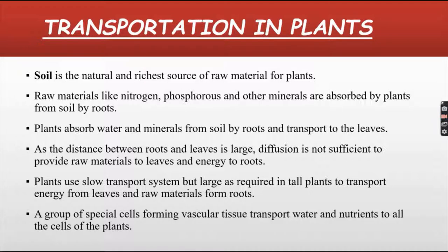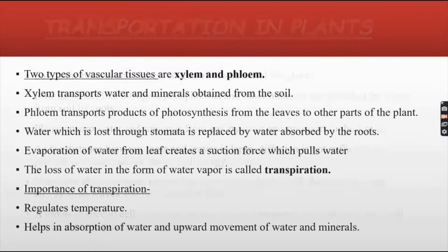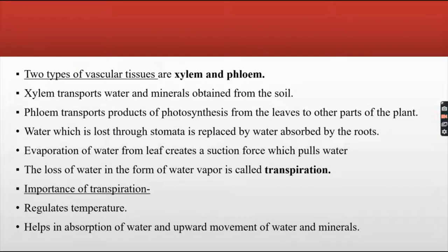A group of special cells forming vascular tissue transports water and nutrients to all the cells of the plant. There are two types of vascular tissues: xylem and phloem. Xylem transports water and minerals obtained from the soil. Phloem transports products of photosynthesis from the leaves to other parts of the plant. Water lost through the stomata is replaced by water absorbed by the root. Evaporation of water from leaves creates a suction force which pulls water upward. The loss of water in the form of water vapor is called transpiration.